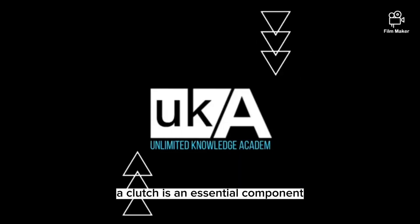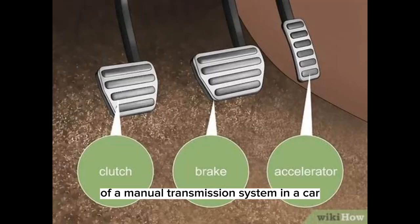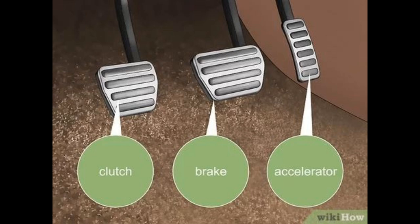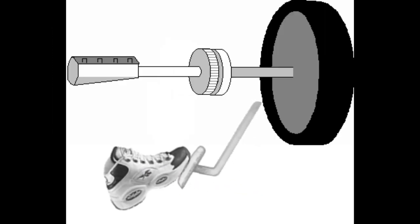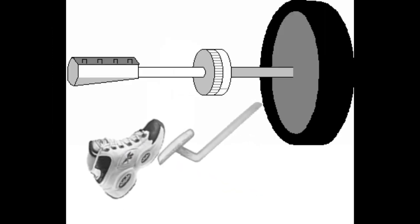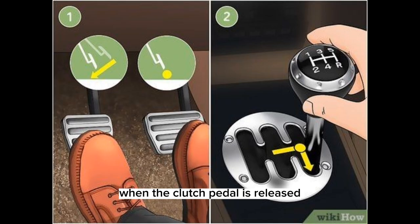A clutch is an essential component of a manual transmission system in a car. It allows the driver to smoothly engage and disengage the engine from the transmission when changing gears.